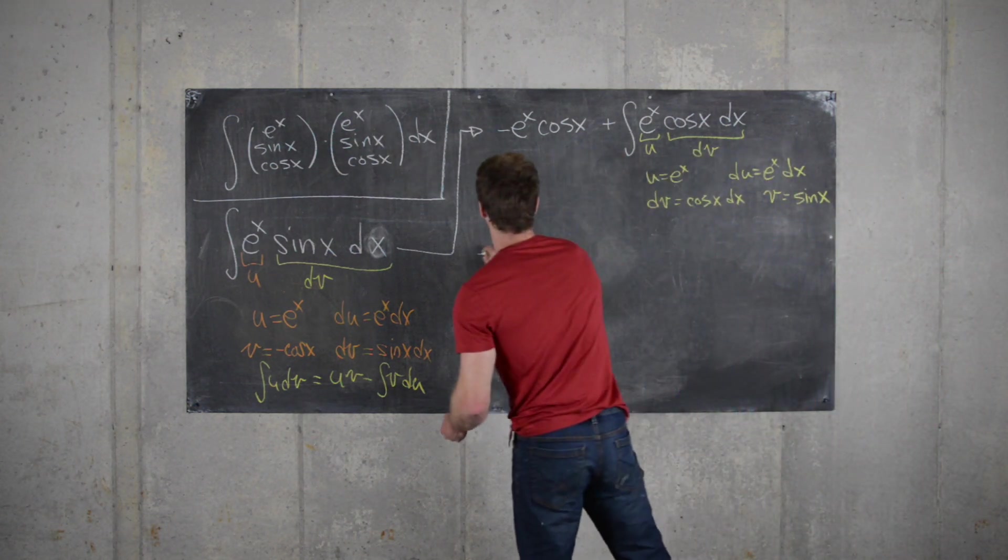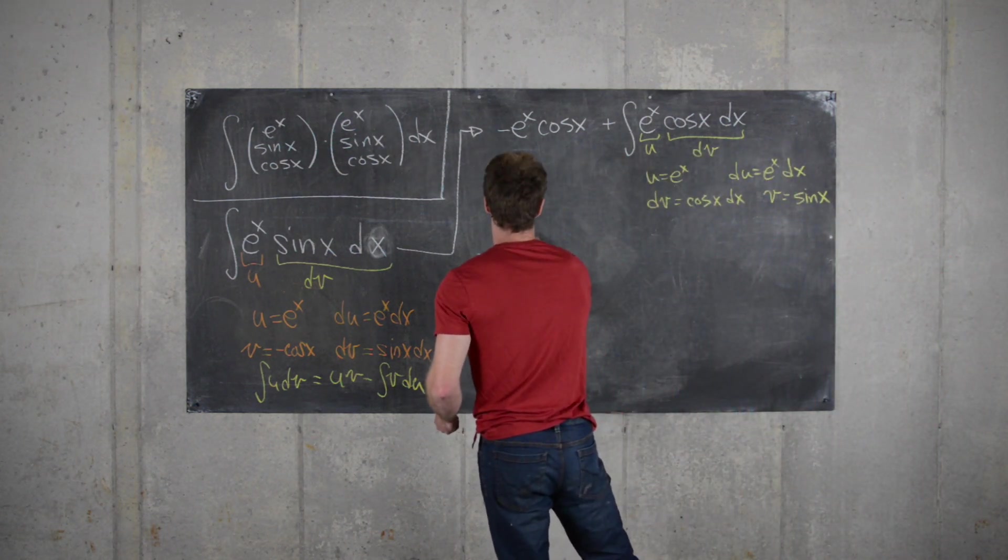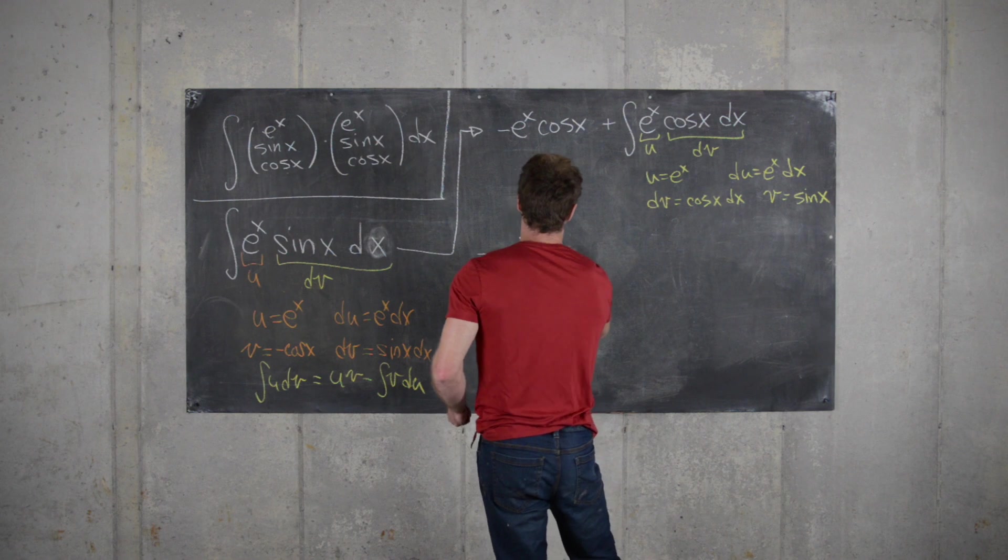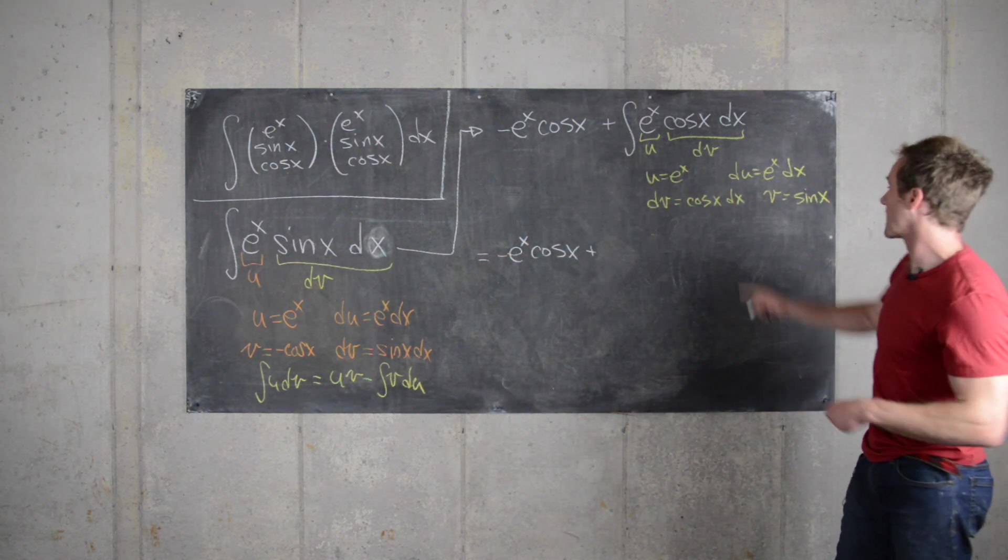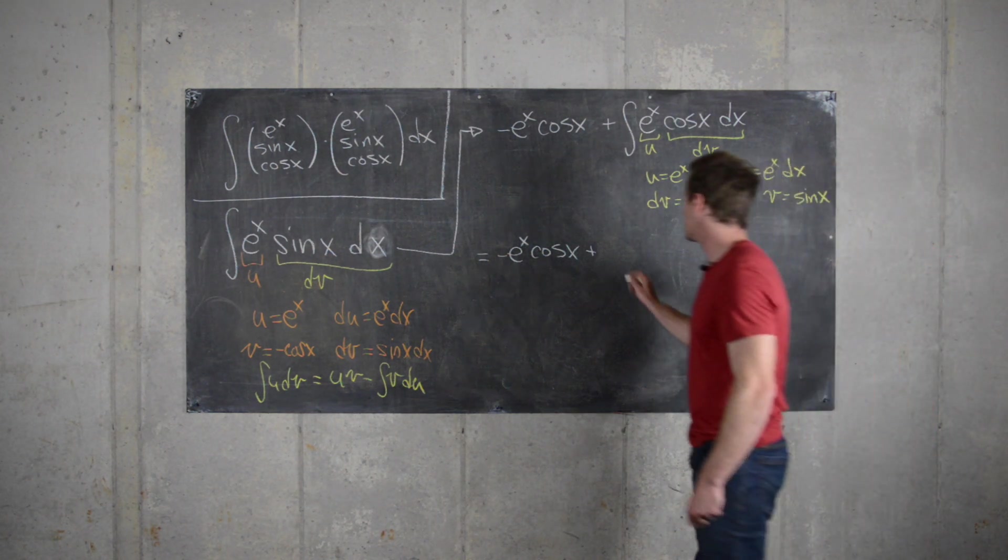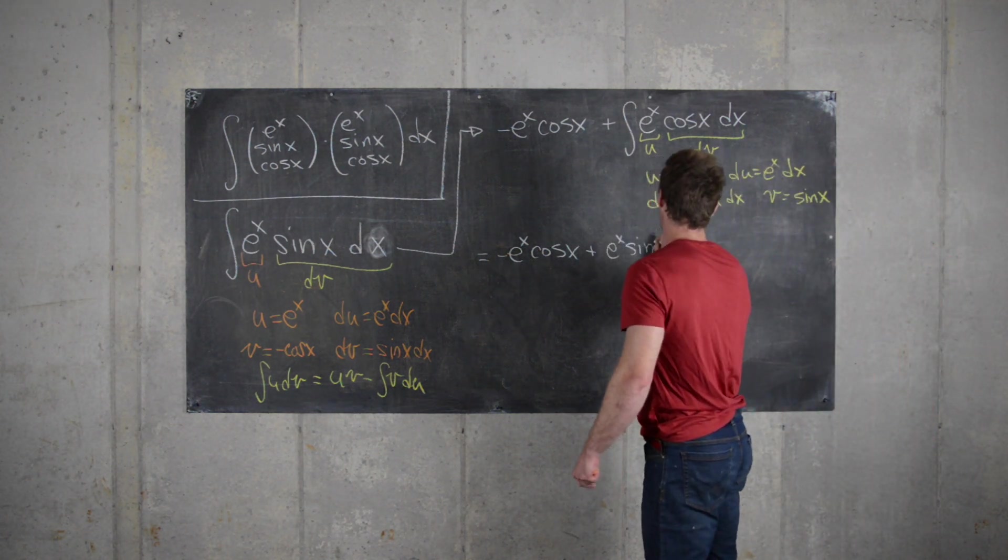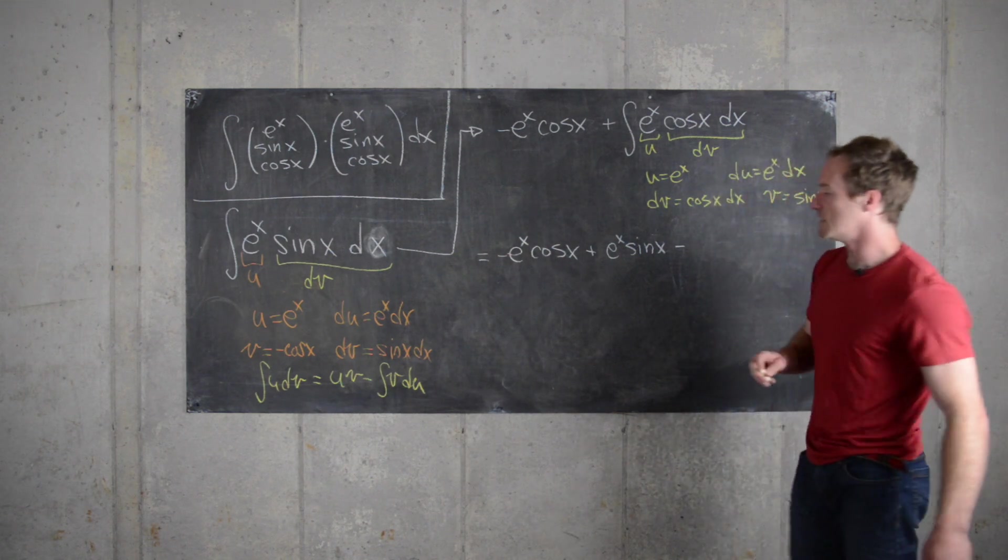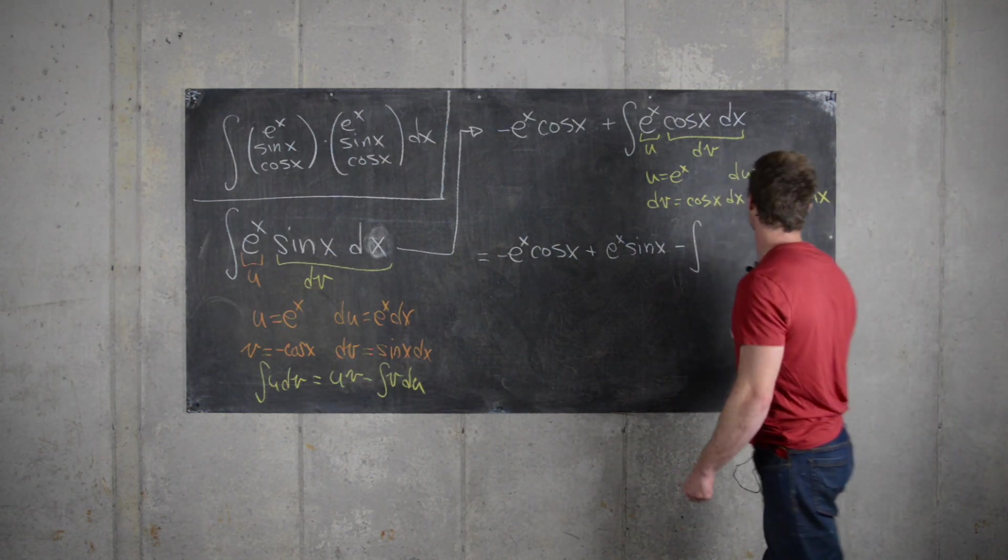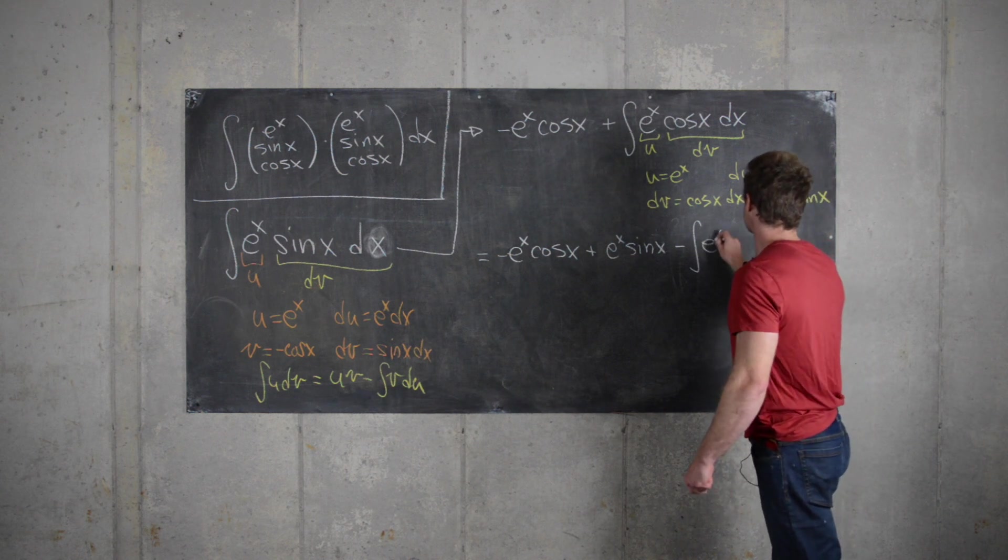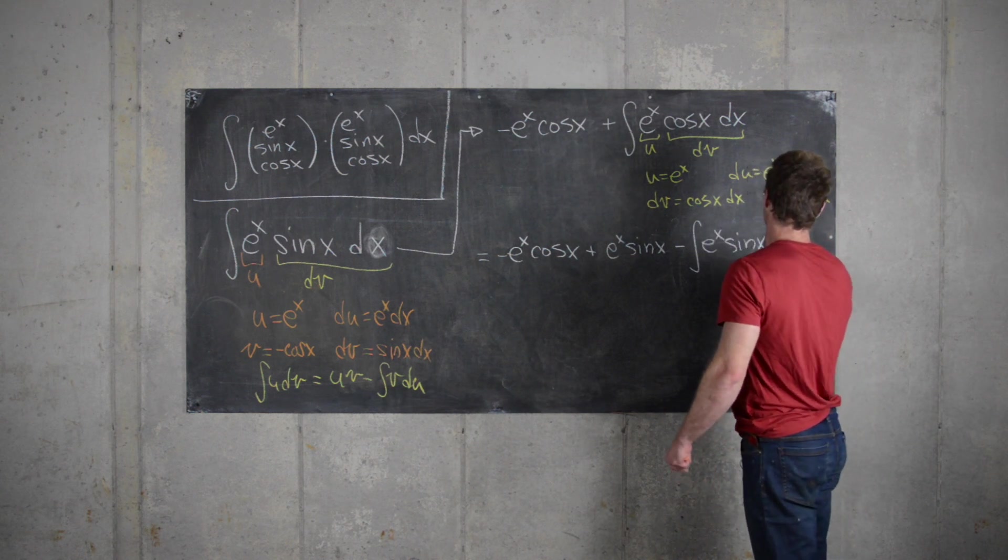So if we bring this down, we'll say we still have our minus e to the x cosine x from before. And now we have plus our new u times v. So plus e to the x sine x minus the integral of our new v du. So that'll be minus the integral of e to the x sine x.